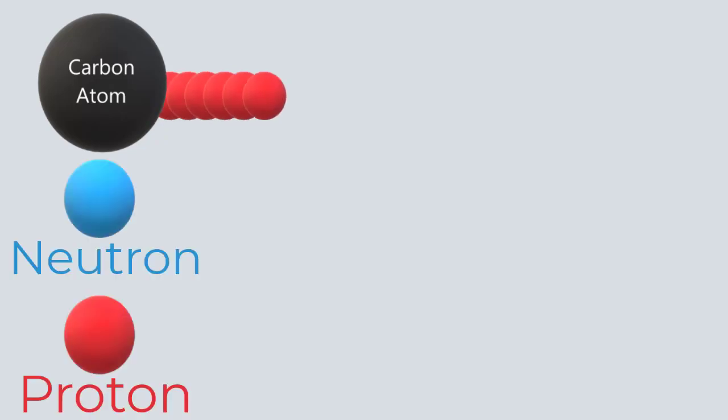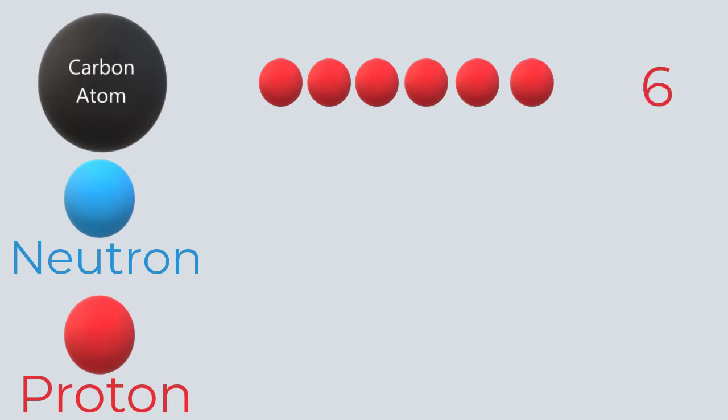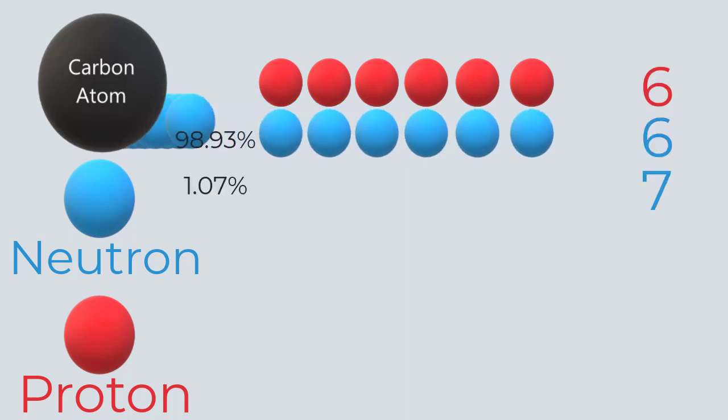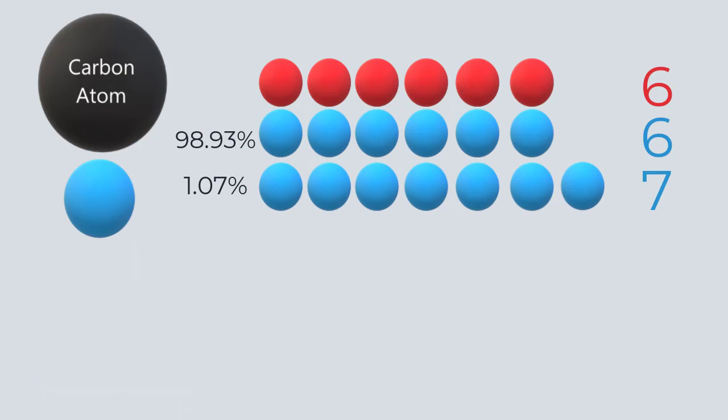For example, about 99% of carbon atoms, which always have 6 protons, have 6 additional neutrons, while the remaining 1% have 7 neutrons. All of these are called isotopes of carbon.